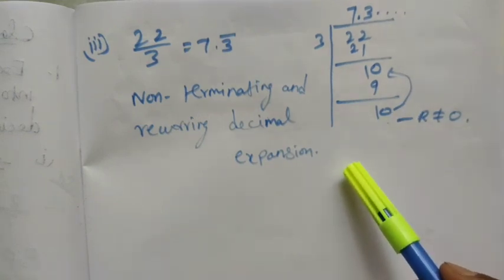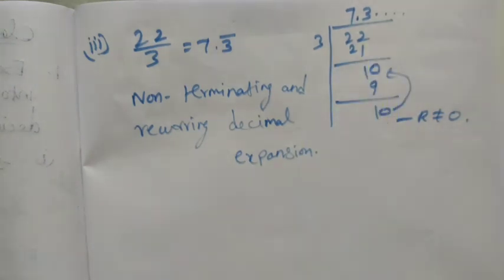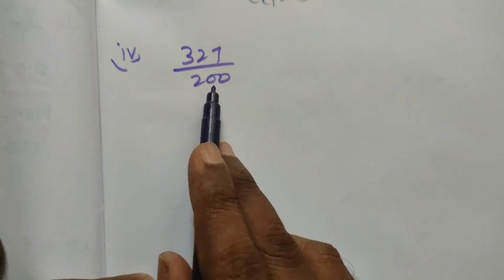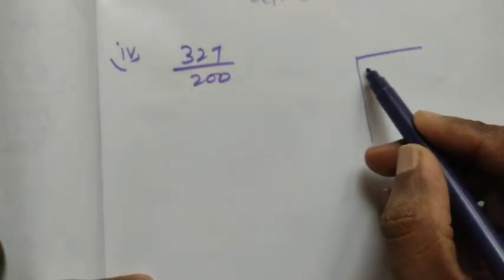Now Roman numeral (iv): 327 divided by 200. Here is 327 divided by 200.